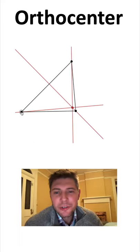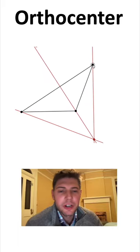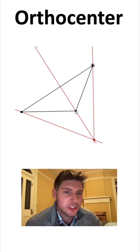If we make it a right triangle, the orthocenter lies right on the triangle. And if we make it an obtuse triangle, the orthocenter is now outside of the triangle.